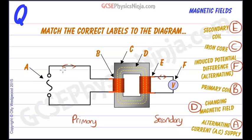And that's why transformers can only work with alternating current, AC, because we need that magnetic field to be continually growing and collapsing to cut through the secondary coil to induce a potential difference which is then AC or alternating as well.